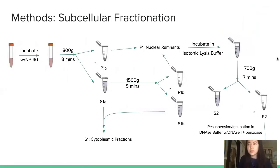For their subcellular fractionation protocol, first they incubated cell cultures with NP-40, important to separate nuclei from other cell fractions. Then they centrifuged at 800g for 8 minutes to separate pellet 1a and supernatant 1a. For extra measure, they centrifuged S1a at 1500g for 5 minutes to ensure complete separation of nuclear remnants from cell fractions. This yielded P1b, which was combined with P1a to yield pellet 1 with all nuclear remnants, and S1b combined with S1a to give S1 cytoplasmic fractions.